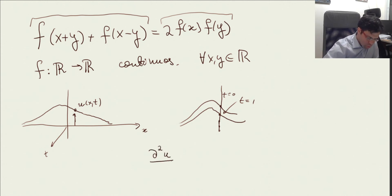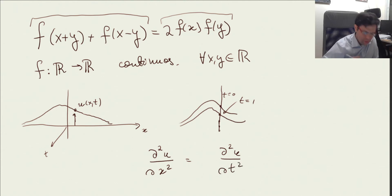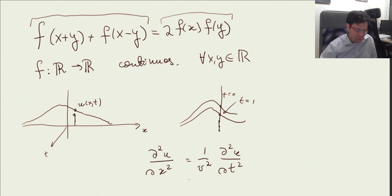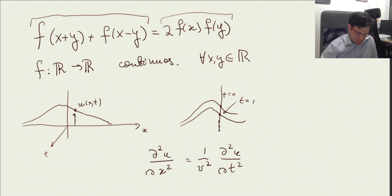The second derivative of u with respect to x equals one over v squared times the second derivative of u with respect to time, where v turns out to be the velocity of the wave. Physics gives us intuition that physical dimensions should match: x has dimensions of length, and to convert to time dimensions in the denominator we need dimensions of velocity, so that velocity times time gives dimensions of length.